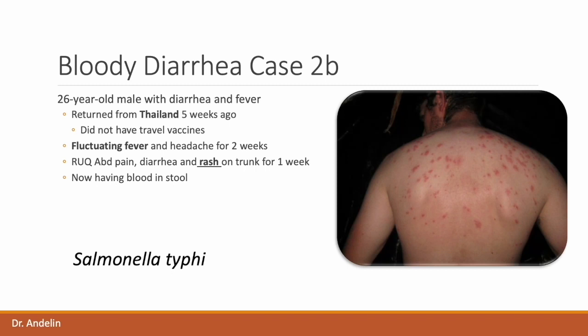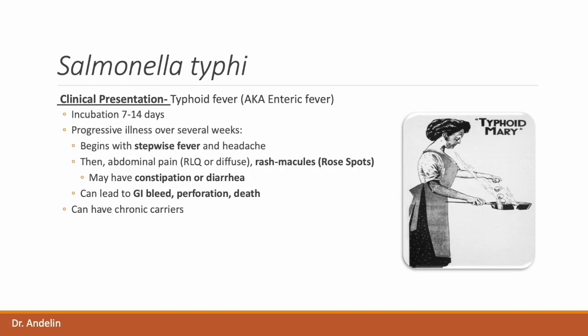Note the difference in presentation here compared to our patient with non-typhoidal Salmonella. Typhoid fever, also known as enteric fever, is caused by Salmonella typhi and typically has a longer incubation period of 7–14 days. Symptoms typically begin with a stepwise fever that rises and falls, giving rise to troughs and peaks. Patients also frequently have headache, abdominal pain that may be right lower quadrant or diffuse, and rose spots — faint erythematous macules on the trunk resulting from bacterial emboli. There may be either constipation or diarrhea. Ultimately, patients can develop gastrointestinal bleeding, intestinal perforation, and potentially death.